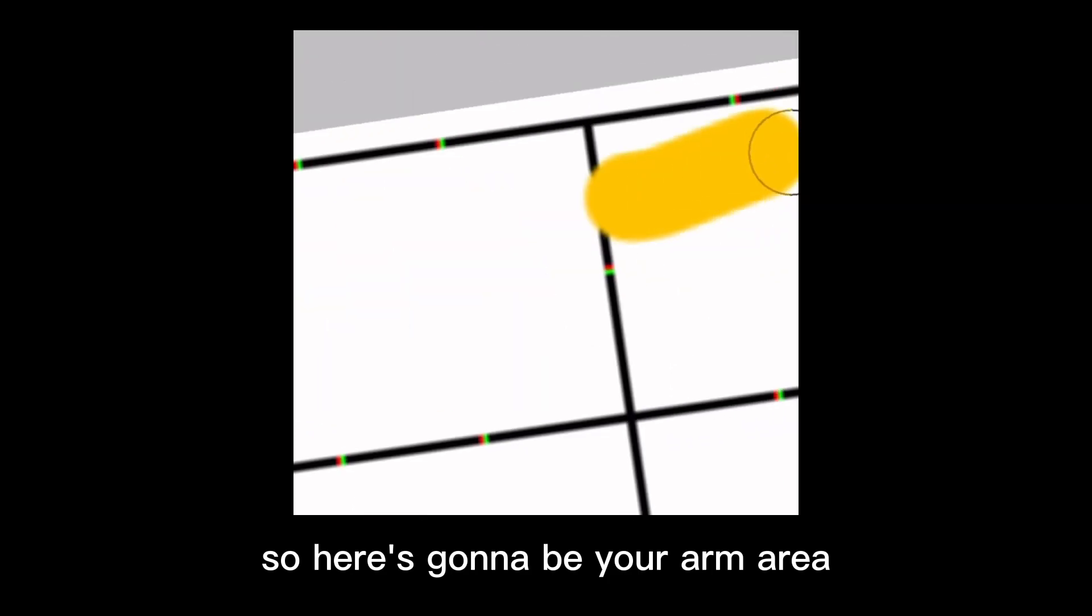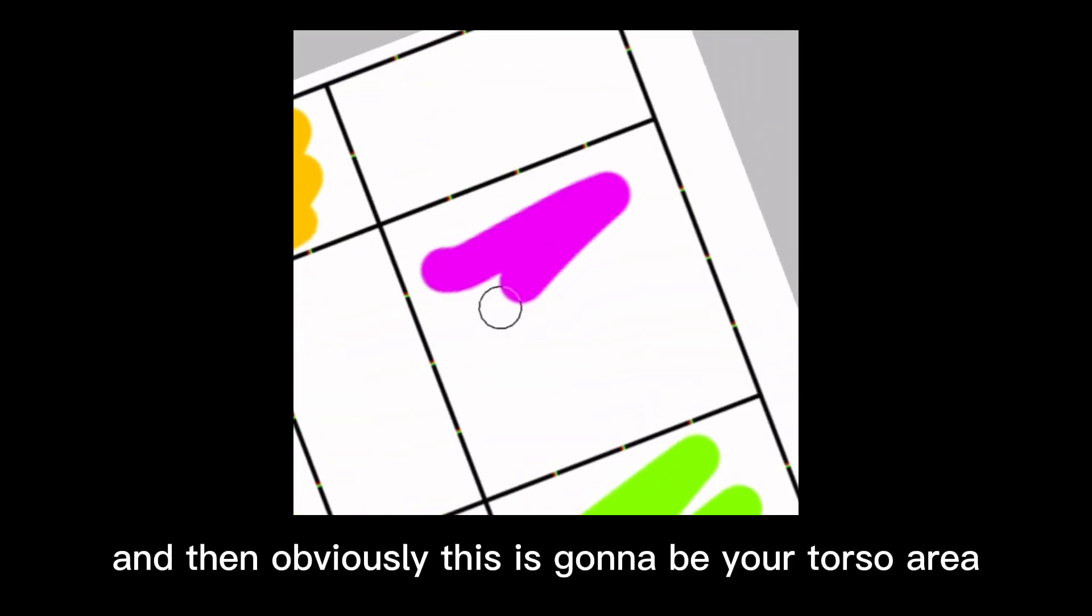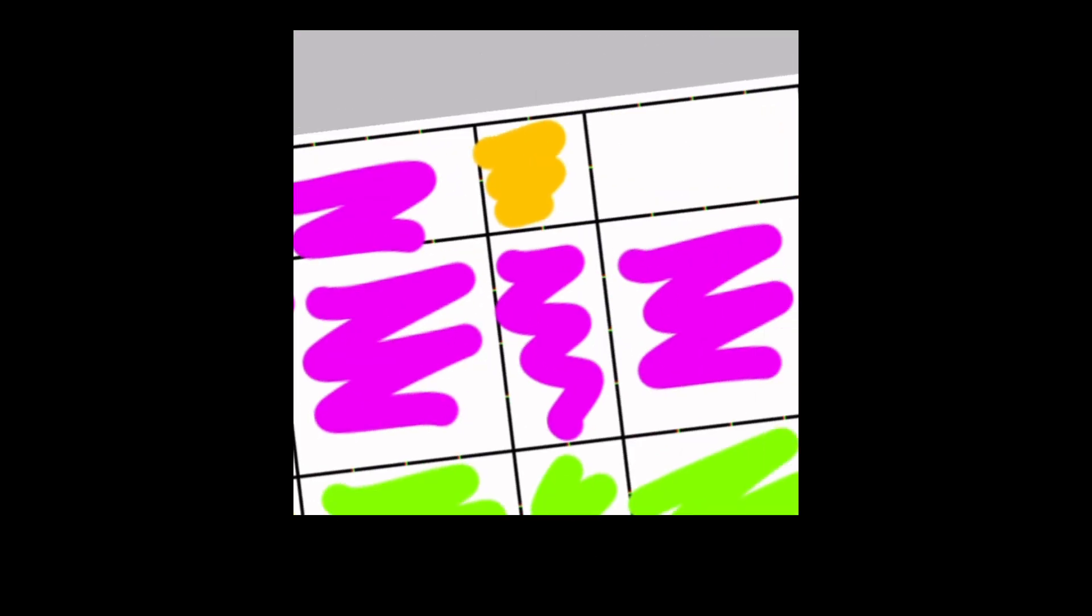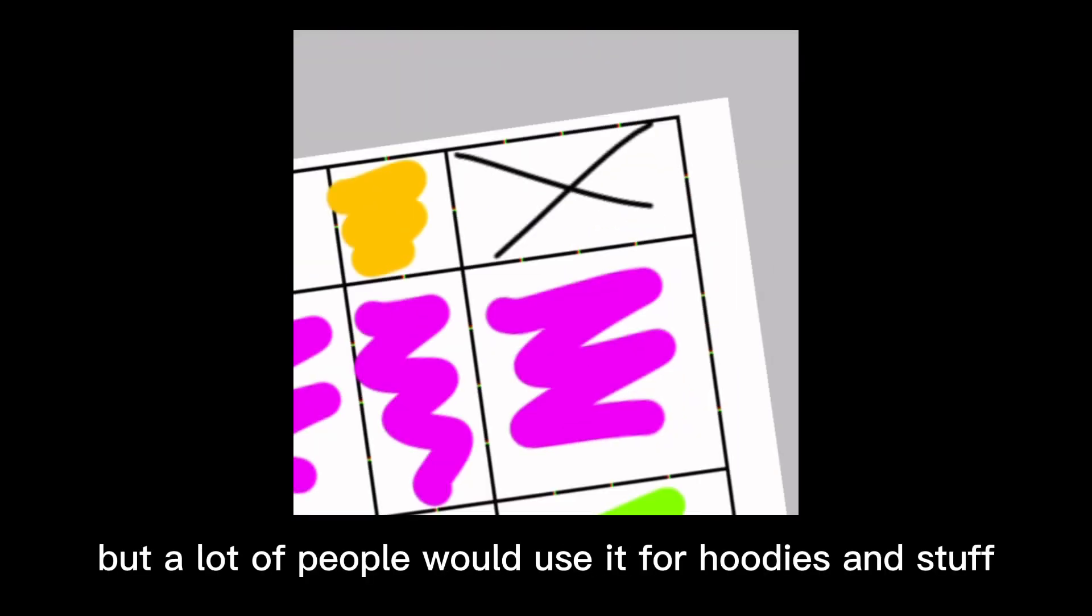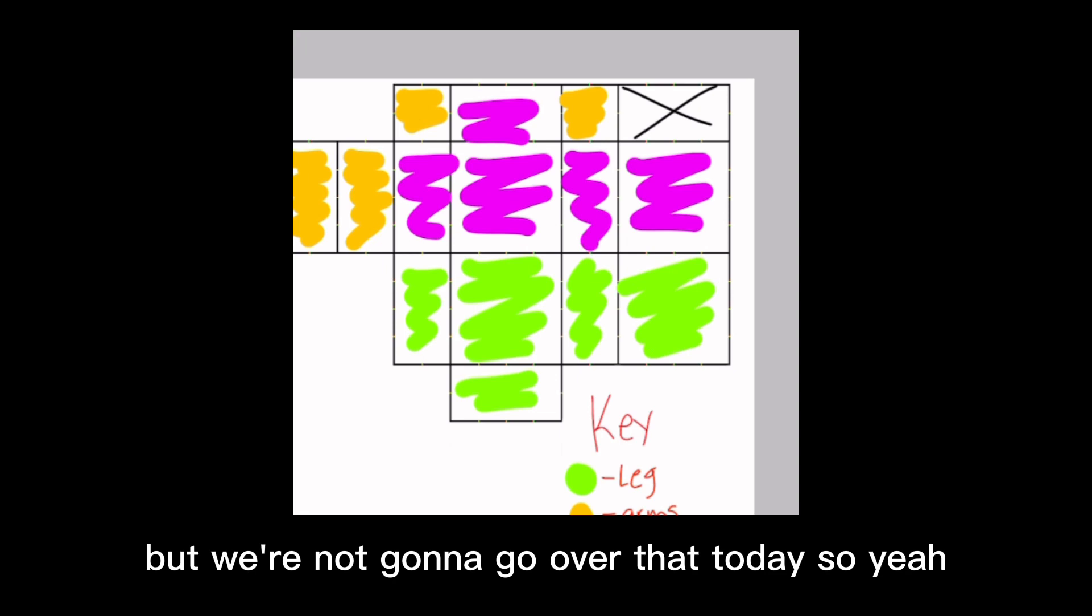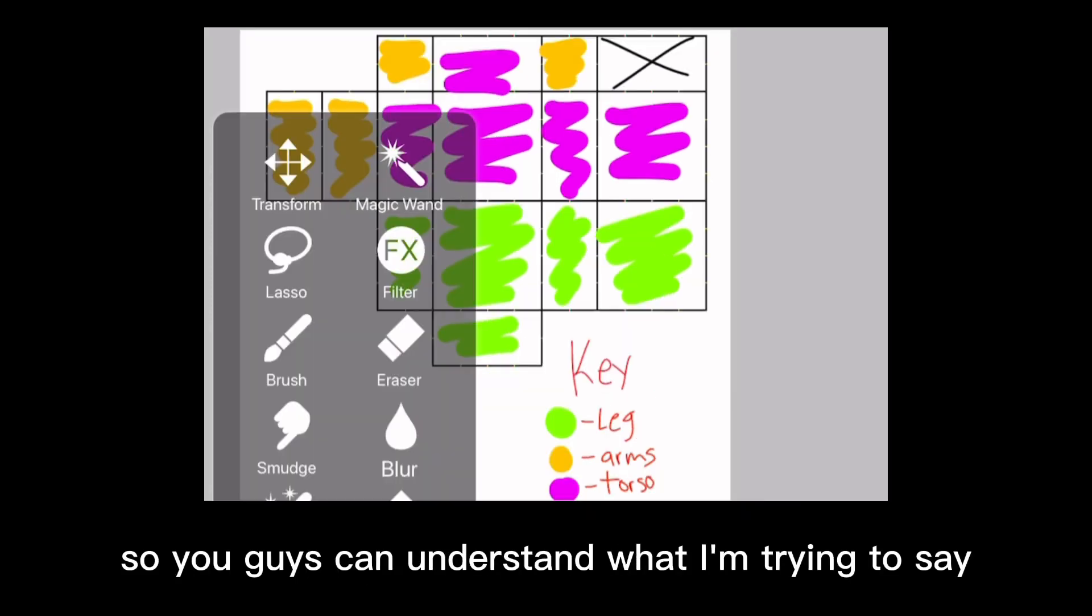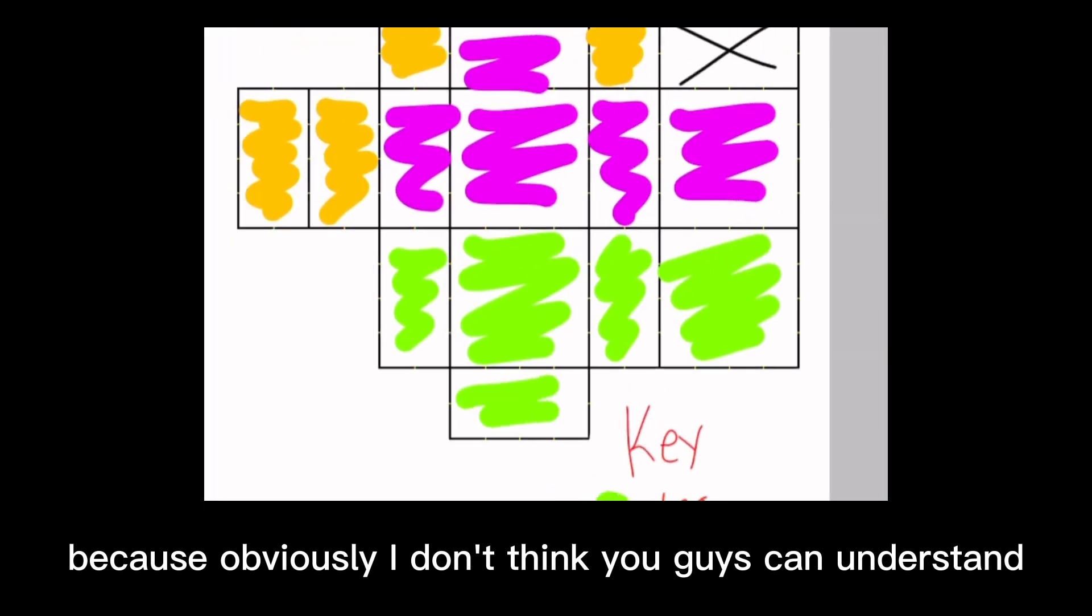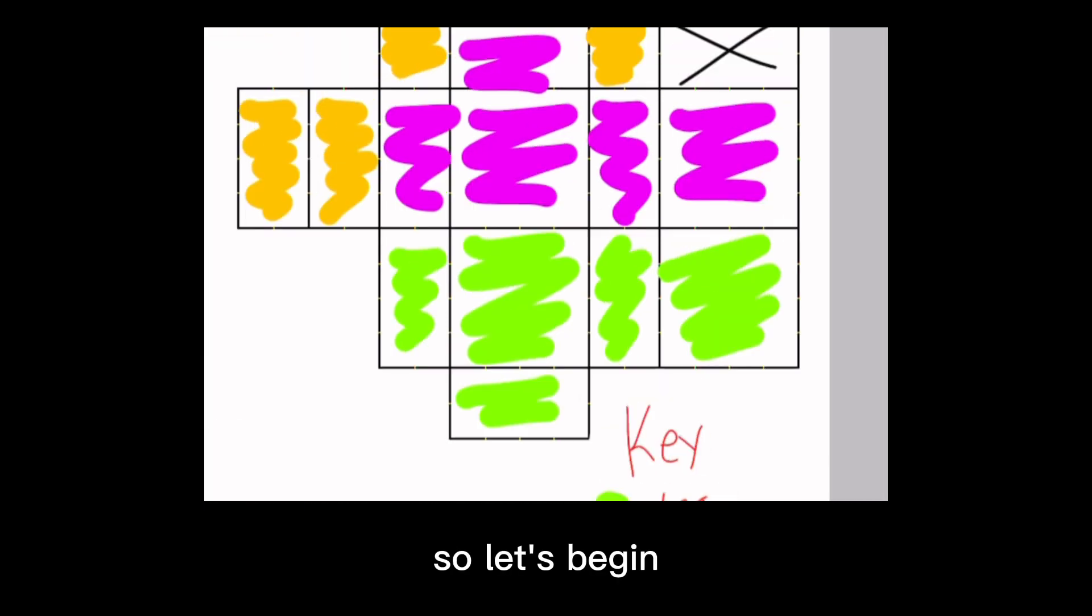Here's going to be your arm area, and then obviously this is going to be your torso area. This little section I don't really know, I don't use it, but a lot of people would use it for hoodies and stuff, but we're not going to go over that today. Let me go over each section in depth so you guys can understand what I'm trying to say.